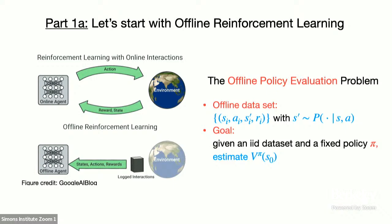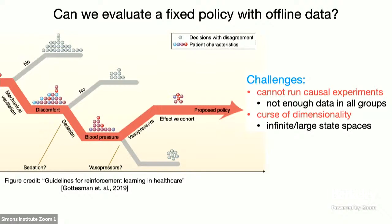Our data set looks like a state, the action we took, the next state, and the reward. We just want to evaluate what would have happened if we execute some policy pi — a measure of how good a fixed policy is. The challenges here include that we can't run causal experiments because we have observational data, and we might not have enough data in various groups. On top of that, we have the curse of dimensionality — there are many possible patient configurations and treatments. I'm using a running example from healthcare: we have log data for sequential treatments and want to evaluate some new treatment using the data we've collected.